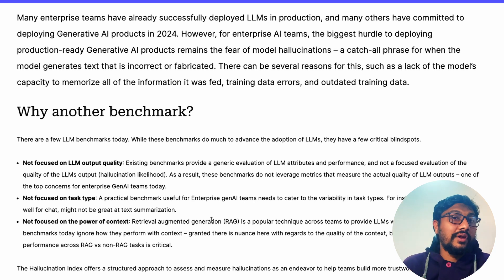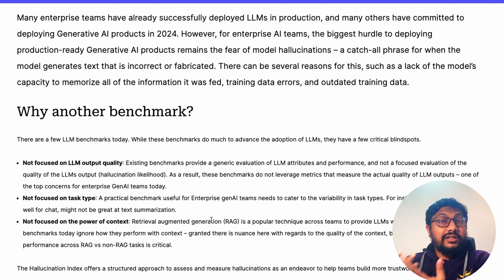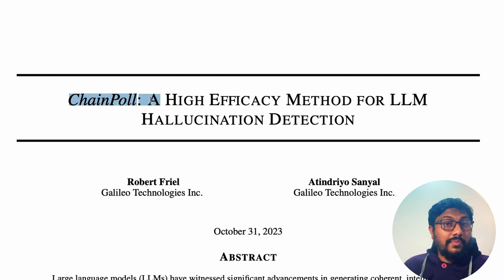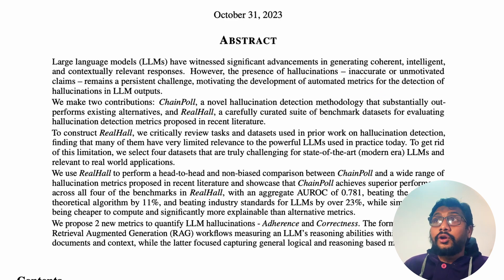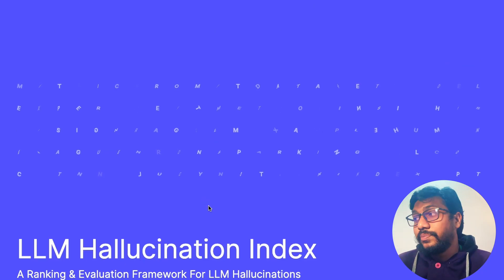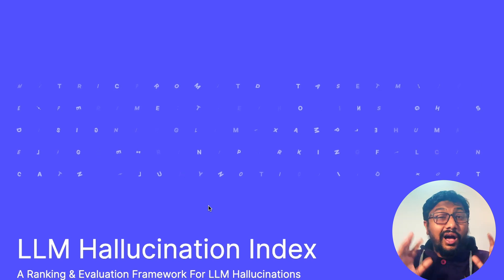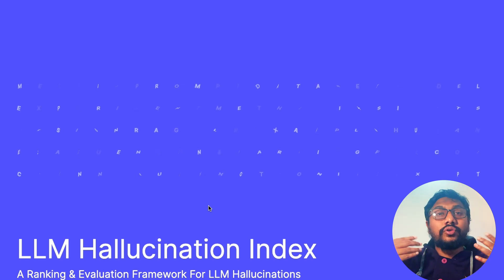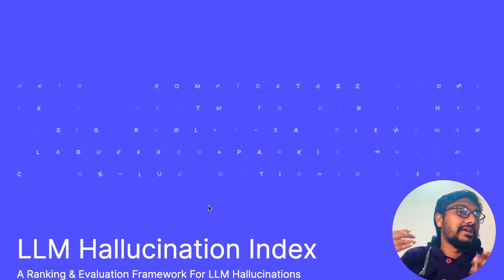Having a new benchmark that isn't polluted by existing training data, especially one focused on LLM output quality, is valuable. Their paper on ChainPoll — a high-efficacy method for LLM hallucination detection — is definitely worth reading. I hope this video was helpful not just in telling you which model is best, but in walking you through how the hallucination index was built. See you in another video — happy prompting!